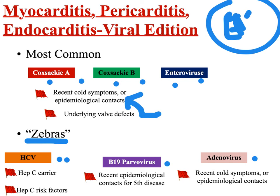For parvovirus B19, the big one you'd see is a recent epidemiological contact who has had fifth disease. We met this virus before as a causative agent of a nuisance-y childhood illness, but it can be quite serious for caregivers who in some rare instance develop a viral cardiac infection from it. The final one you occasionally see is adenovirus — again met as a causer of common cold symptoms, but it can also cause cardiac illness. So if you have a valve patient who comes in with shortness of breath and chest pain and someone in their house has recently had a cold, you have four possible causative agents, and you might also want to check for parvovirus B19 and hep C if being thorough.